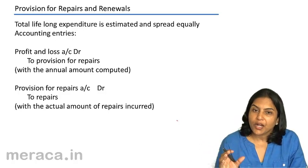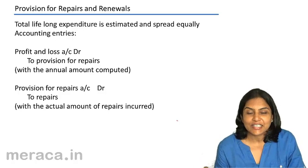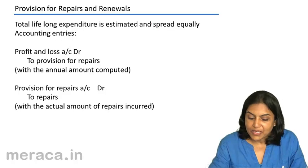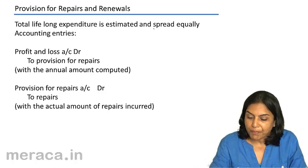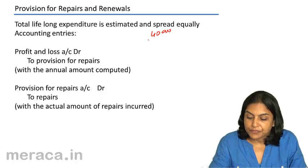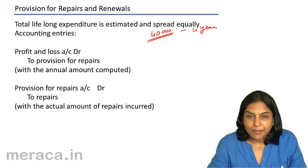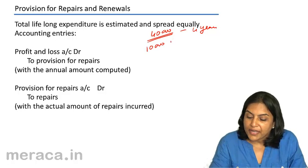The total repairs expenditure on a particular asset is estimated. Let us assume that we estimate the total expenditure of repairs to be around 40,000, and this is over a life of 4 years. If that be the case, then we create a provision of 10,000 every year.